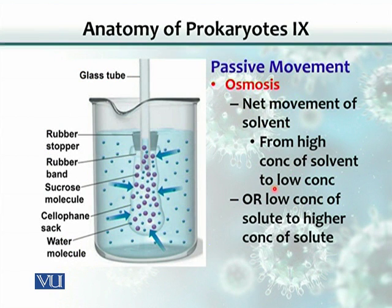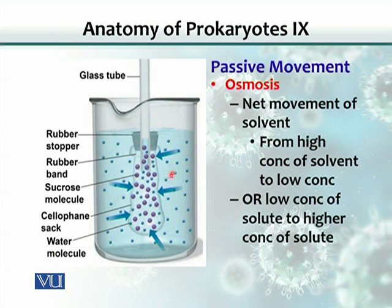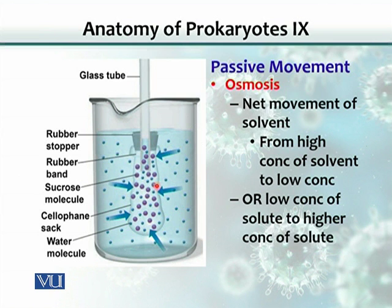Osmosis: if a sugar solution is placed inside a semi-permeable membrane — one that does not allow sugar molecules to pass through but does allow water molecules — the water from the beaker will move through the membrane into the sac. This is because the solvent concentration is higher outside compared to inside. The larger sugar molecules are retained inside the sac and cannot cross the membrane.